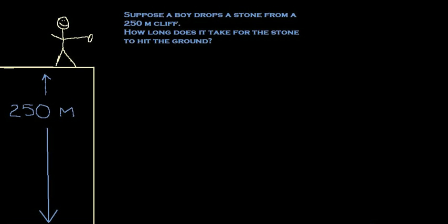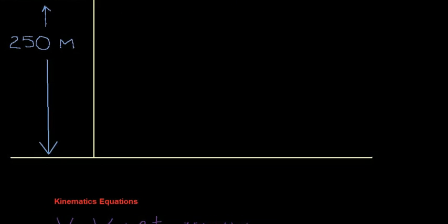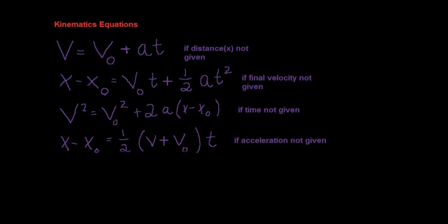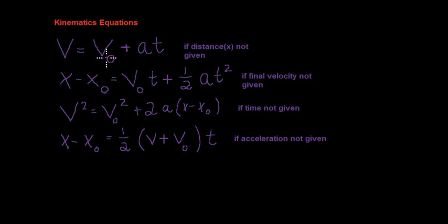Let's take a look at the kinematics equations. V stands for velocity. The V0 stands for the initial velocity, so this one will stand for the final velocity. The A stands for acceleration, and the T stands for time.